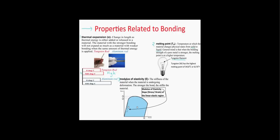The third property related to bonding is the modulus of elasticity, or E, also called Young's modulus. It is the stiffness of the material when undergoing elastic deformation — the stronger the bond, the stiffer the material. All you need to know for now is that it is a measure of stiffness; however, we have two videos about the tensile test that cover modulus of elasticity in much more detail, and those links are over here.